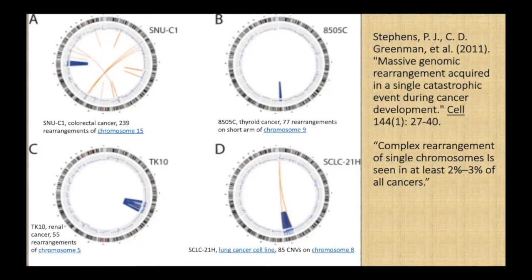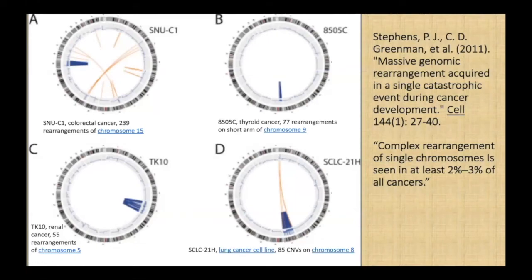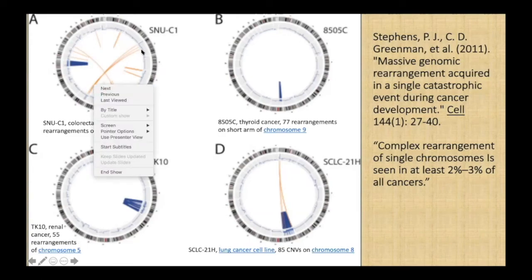This slide shows circus plots for human cancer genomes. In a circus plot, the human chromosomes are arranged around the circle — here's chromosome one, chromosome two, chromosome three, chromosome four, and so forth, until we get to chromosome 22, and then the X and the Y chromosome. The chromosome rearrangements are indicated by the colored lines. The orange ones indicate mostly interchromosomal exchanges, but the dark blue lines present in all four genomes indicate intrachromosomal rearrangements.